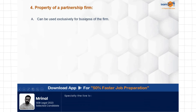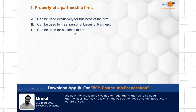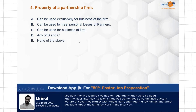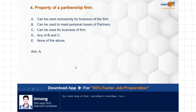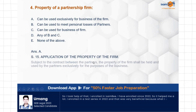Question: Property of a partnership firm can be — used exclusively for business of the firm, used to meet personal losses of partners, used for business of the firm, any of B and C, none of the above. The correct answer is A: property of the partnership firm can be used exclusively for the business of the firm. Section 15 deals with the application of property of the firm.